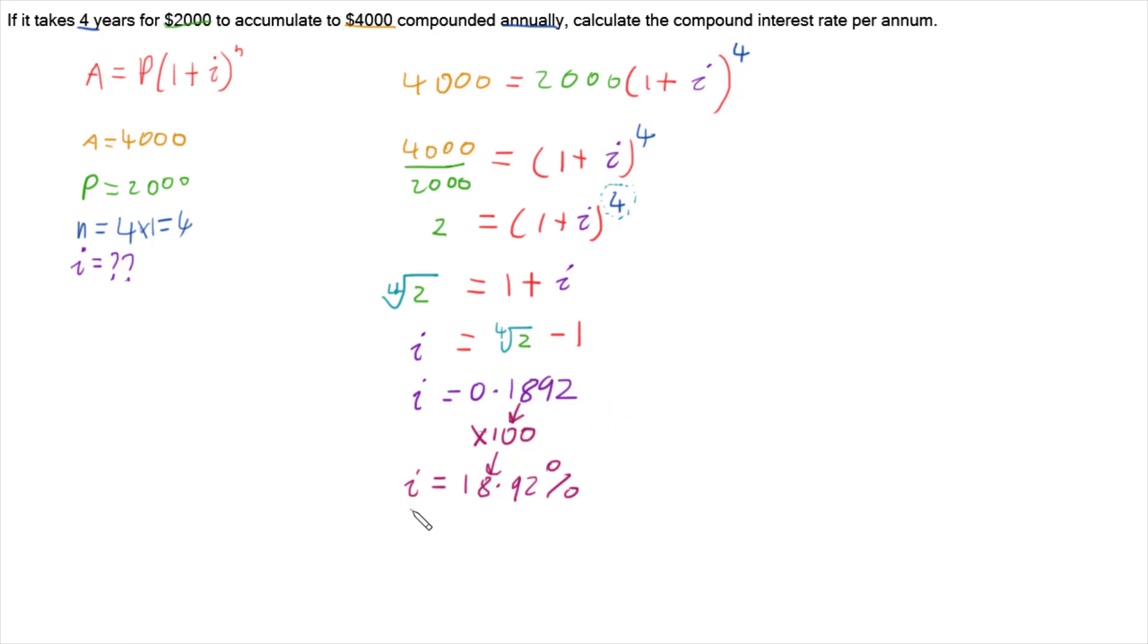And there we have it. We have the annual interest rate for $2,000 compounding annually up to $4,000 across 4 years. And really the key to it is a little bit of algebra, but mainly this power of 4 becomes a 4th root. So whatever your power is, whatever your n is, becomes your type of root. So this number just becomes the type of root.